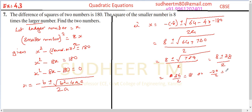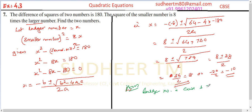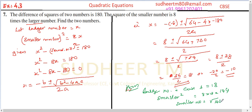So X equals 8 plus 28 divided by 2, which is 36 divided by 2, equals 18. Or X equals 8 minus 28 divided by 2, which is minus 20 divided by 2, equals minus 10. So the larger number in Case 1 is 18. The smaller number squared equals 8 times 18, which is 144, so the smaller number is the square root of 144, which equals 12.